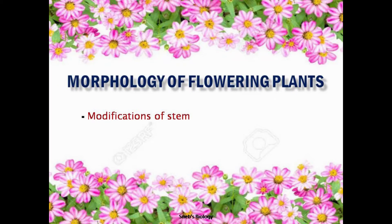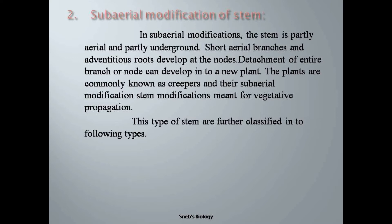Next comes subareal modifications of stem. In subareal modifications, the stem is partly aerial and partly underground. Short aerial branches and adventitious roots develop at the nodes. Detachment of an entire branch or a node can develop into a new plant. These plants are commonly known as creepers, and their subareal stem modifications are meant for vegetative propagation or reproduction. Let's see some subareal modifications of stem.